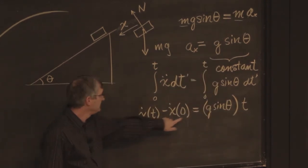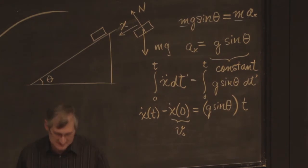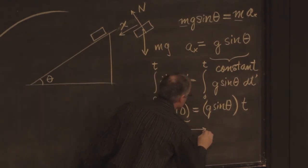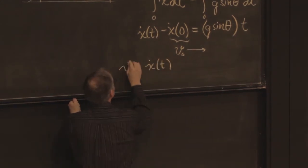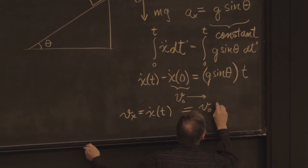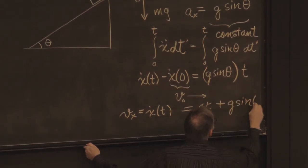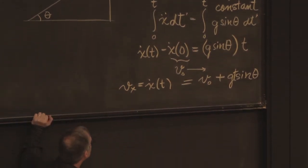V at t, so x dot at t minus x dot at 0 is equal to g sine theta and t minus 0. That's the function of time. That one is just an initial condition. So we typically give this the label v0. The subscript, instead of putting a parenthesis and 0, we put a subscript indicating the initial velocity and slide that over to the other side. So I now have the velocity v sub x of t, which is x dot of t. And that's the same thing as v0 plus g sine theta times t. So I'll sneak the t in that way. It's actually better to sneak the t in that way so it doesn't come after the theta. So then it might look like you're taking the sine of theta times t.